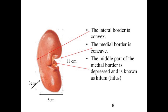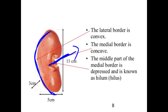The lateral border is convex. The medial border is concave. The middle part of the medial border is depressed and is known as the hilum. The hilum is where structures enter and leave the kidney — specifically the artery, vein, and ureter.